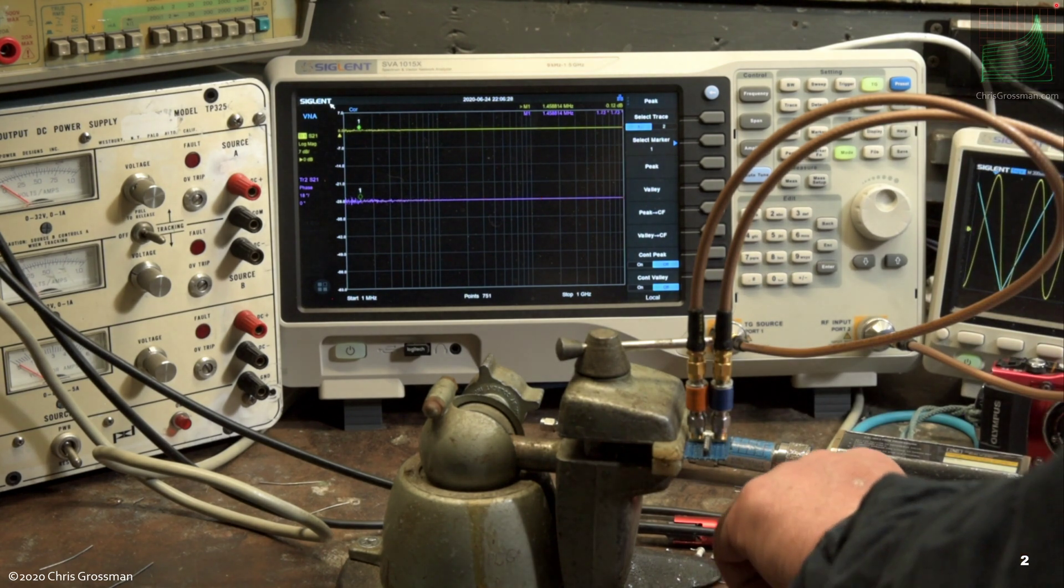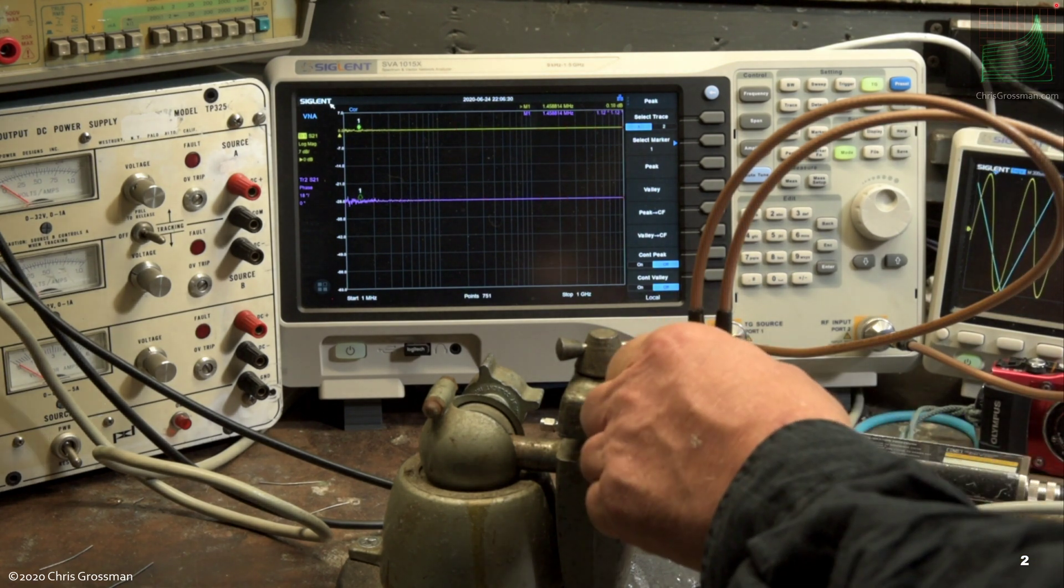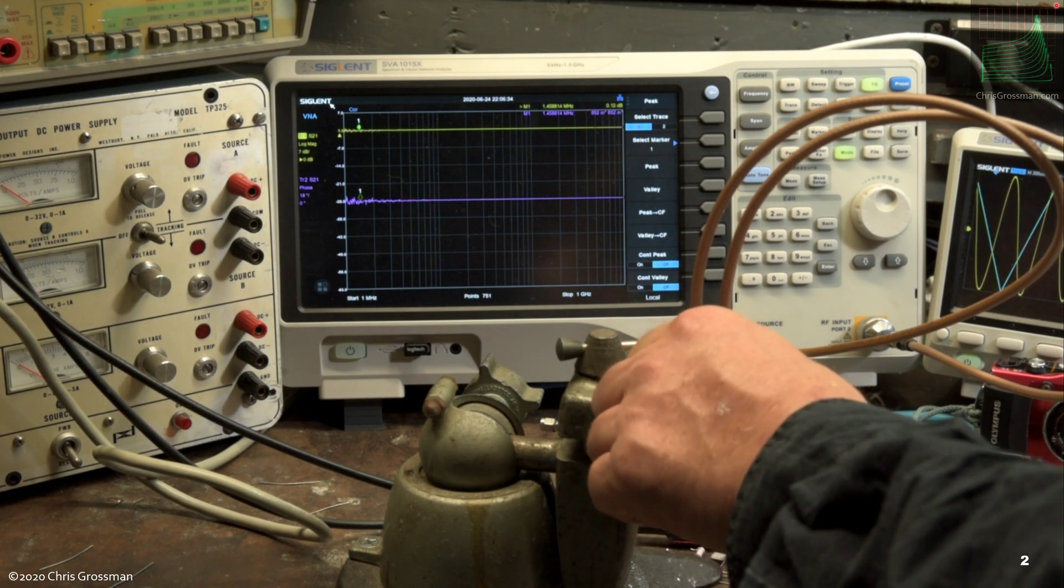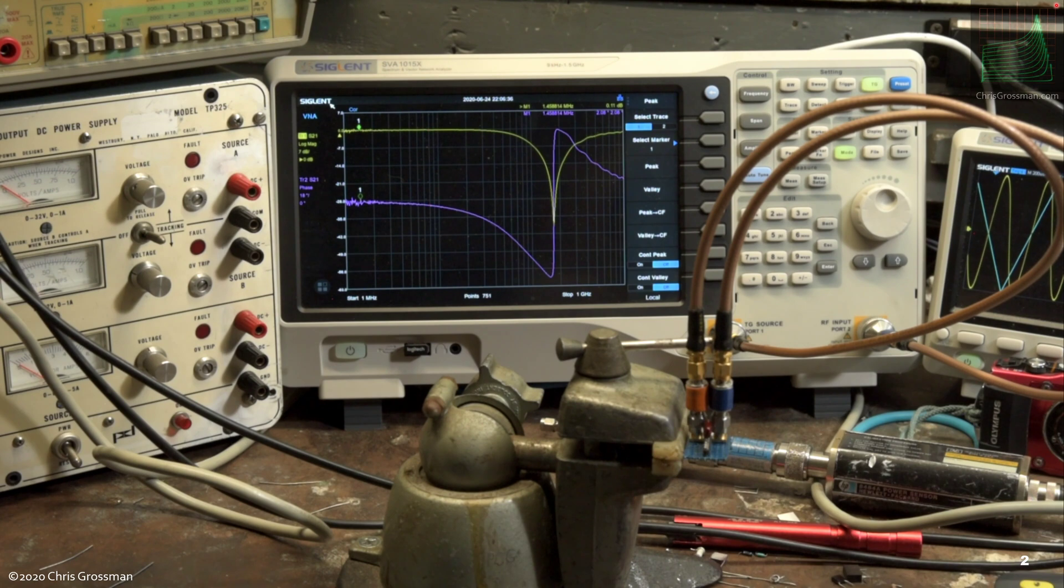So now here, let's say a 75 picofarad silver mica capacitor, and I plug it in. And then hit the valley. It's resonating at 173 megahertz.